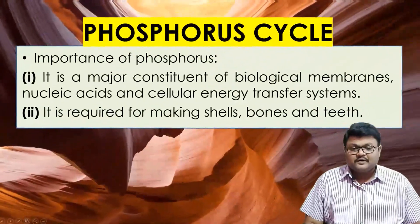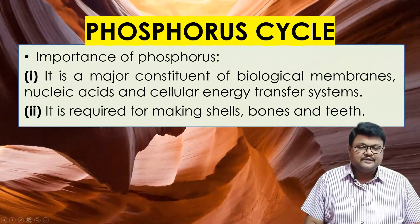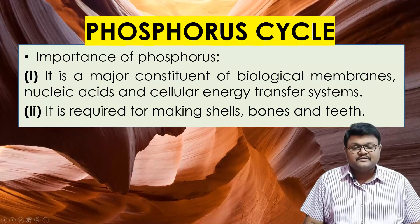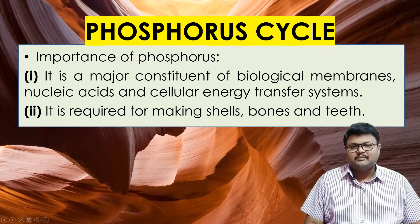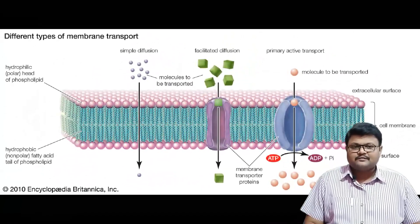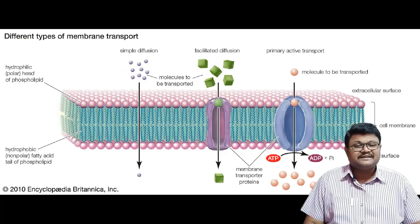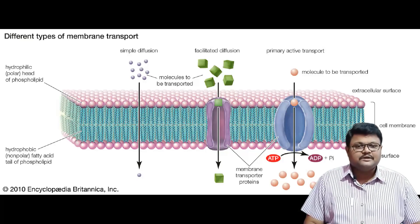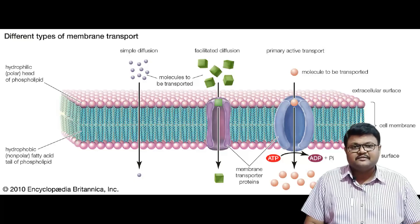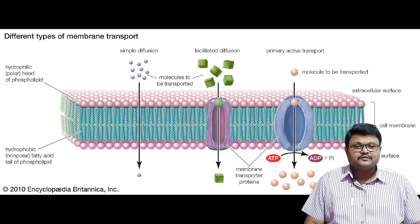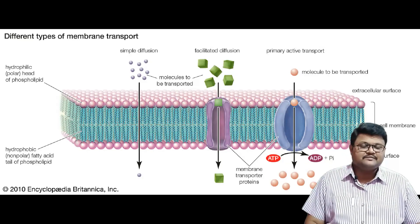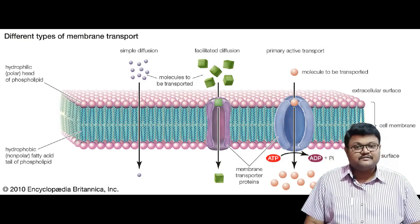Let us get started. First, if we consider our body, in which places is phosphorus present? First, it is present in the biological membranes. We have cell wall, cell membrane, plasma membrane — so many membranes through which molecules transfer from one place to another. If we dig into the composition of these membranes, we find that phosphorus is one of the elements used in the production of these biological or transfer membranes.